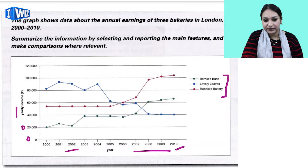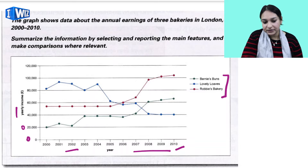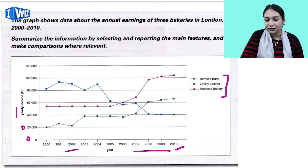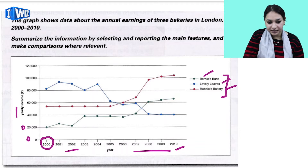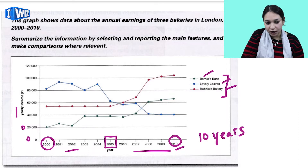The graph shows data about the annual earnings of three bakeries in London between 2000 and 2010. The task says: summarize the information by selecting and reporting the main features and make comparisons where relevant. First of all, we select our main features. The three bakeries are our main subjects, covering a period of 10 years from 2000 to 2010. The midpoint would be 2005, and the midpoint income would be around 60,000.